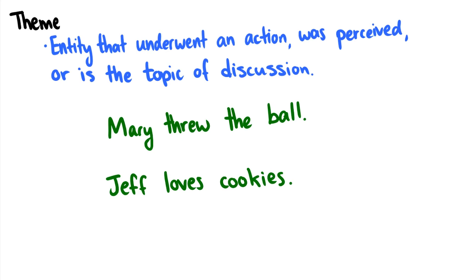The theme is the thing that undergoes the action or is the thing that is being perceived. Themes typically occur with agents and with experiencers. In the case of Mary threw the ball, we know that Mary is the initiator, she's the agent. But the ball is the thing being thrown. So the ball, in this case, is our theme. This is the thing that is the topic of discussion. It's the thing that undergoes the throwing.